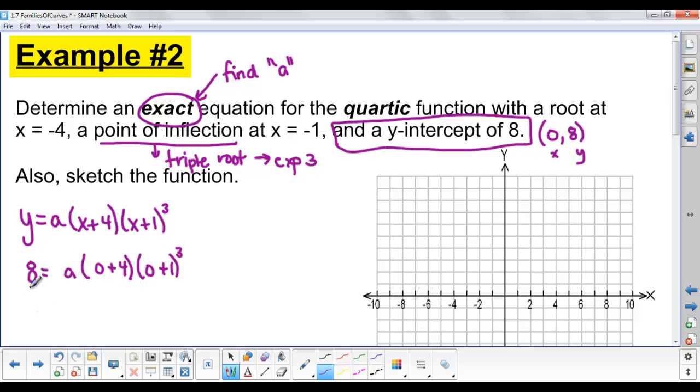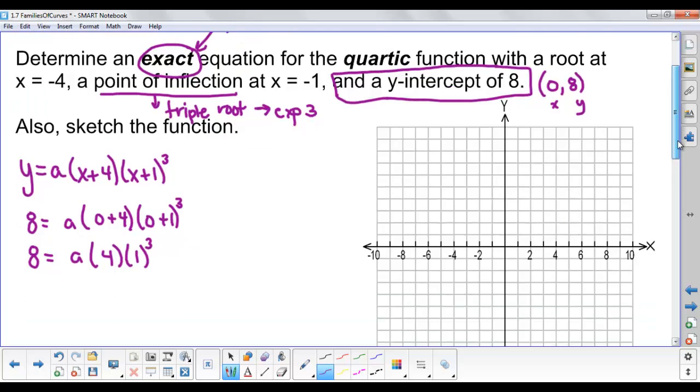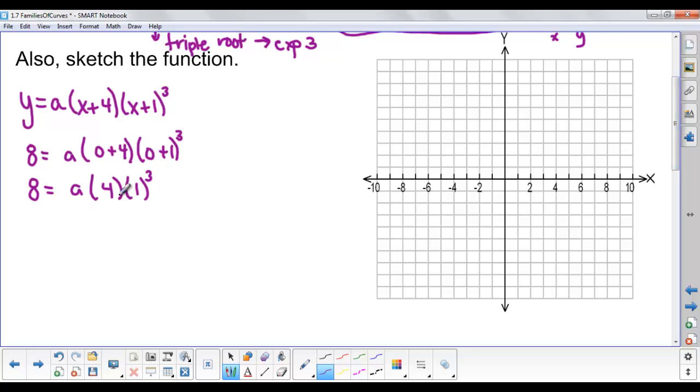Let's do that. 8 equals a(4)(1)³. Well, 1 cubed is just 1. 1 times 4 leaves us with 4a on the right side. Divide both sides by 4, so we find our a value is 2. So our exact equation that goes through the y-intercept (0,8) is y equals 2(x+4)(x+1)³.